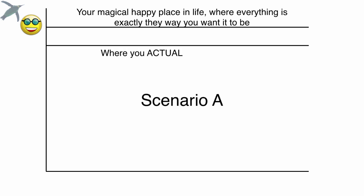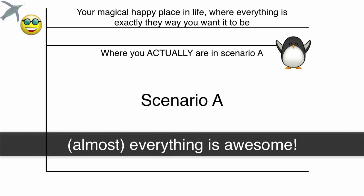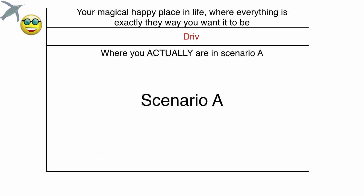However that perfection looks for you, you can call it nirvana if you want. Put that on the graph. And we're going to look at two scenarios. In scenario A, your life is almost perfect. So you're very close to that magical happy place. Maybe your job is great. Your relationships are great. But maybe just there's something bugging you. But the idea is life is awesome.